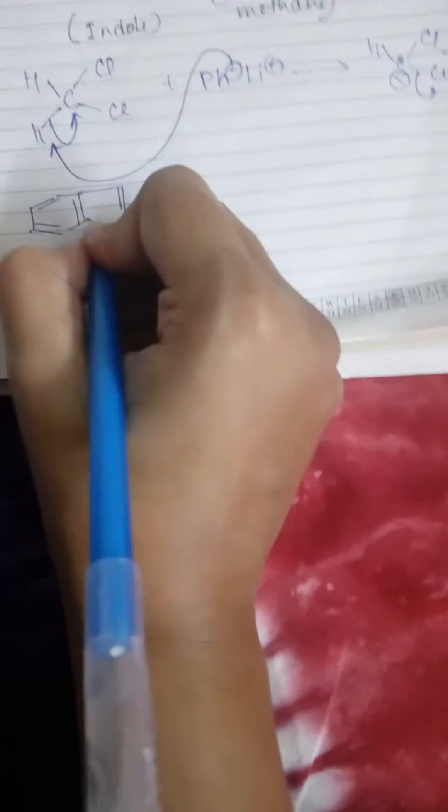Now the base again attacks the acidic hydrogen of indole and forms the anion of indole, the conjugate base of indole. Then in the next step, this conjugate base will attack the electron deficient carbene.